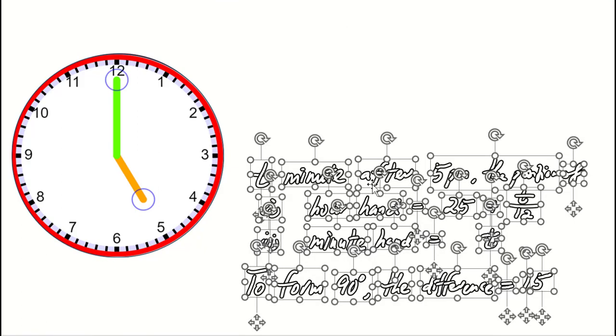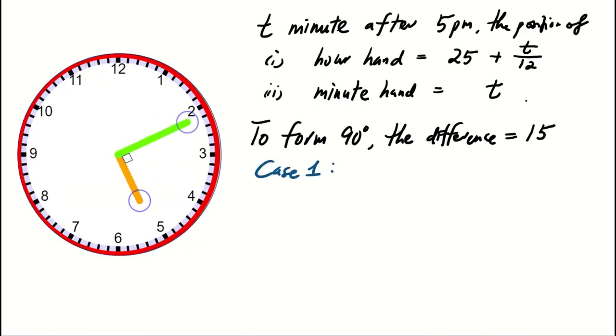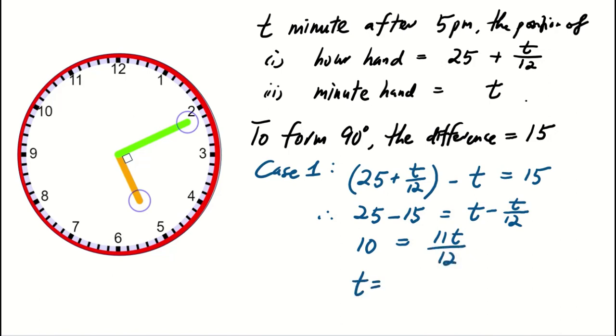For case 1, where the hour hand is ahead, we have 25 + T/12 - T = 15, which can be simplified to T = 10 and 10/11 minutes. This is when they form the first 90-degree angle.